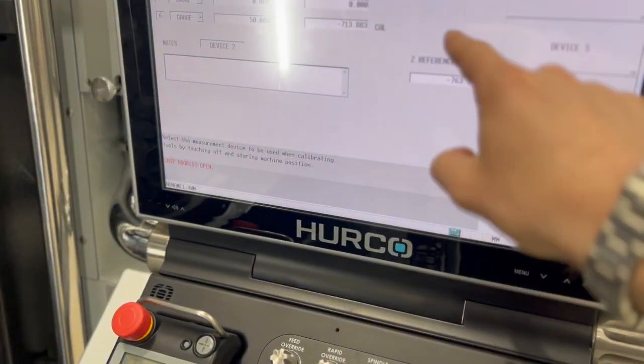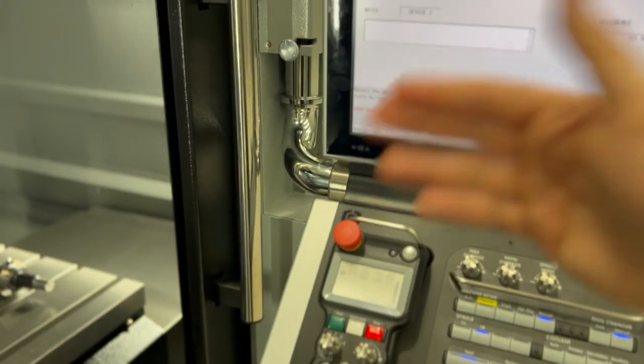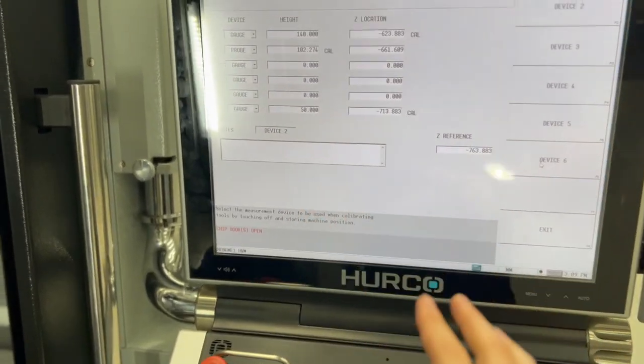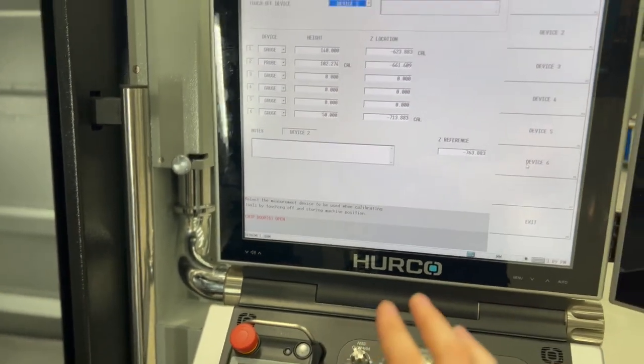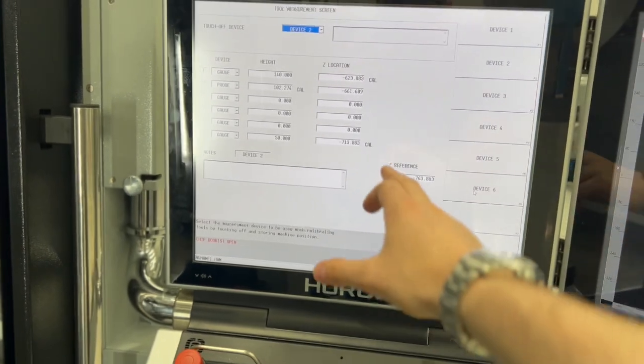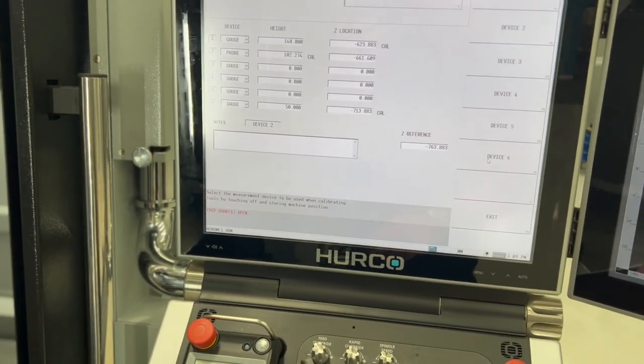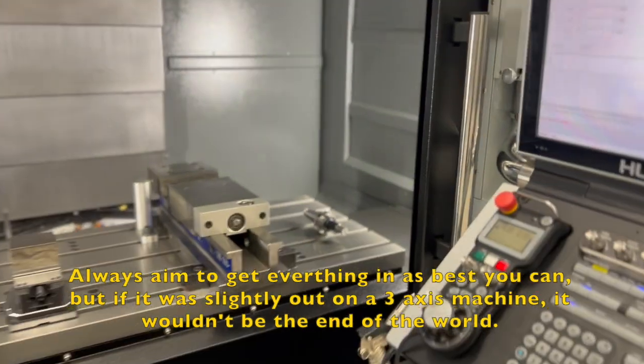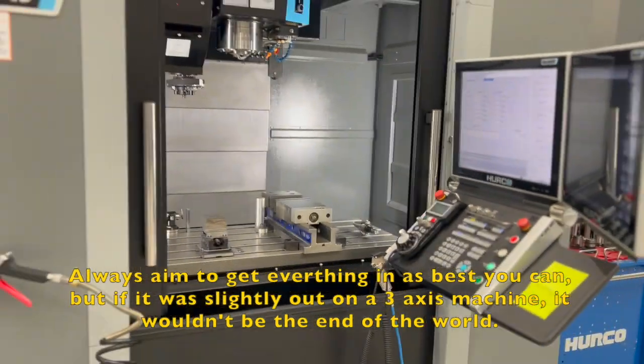So that's why we need this to be perfect because everything else runs from that figure, especially five axis. If you're on a basic three axis machine it doesn't have to be perfect, but as soon as you get onto five axis this figure really has to be as best as you can get it.